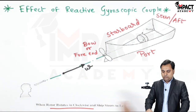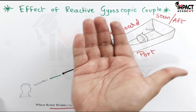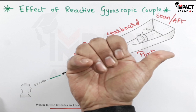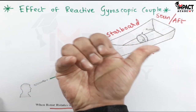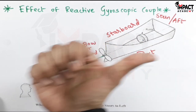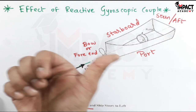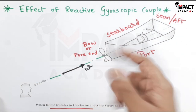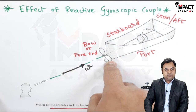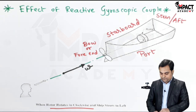To explain how to get this direction: curl the fingers of the right hand in a clockwise direction, as given in the problem, because the rotor is rotating clockwise. The thumb indicates the velocity vector, which is going towards the ship. Next, the ship is steering to the left.